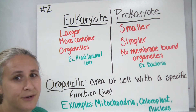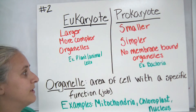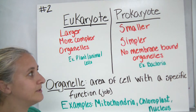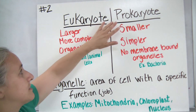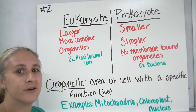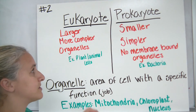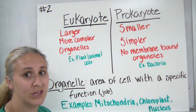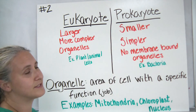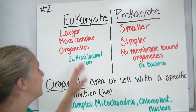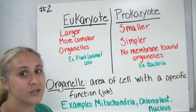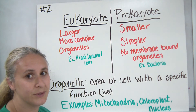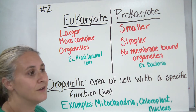The second thing we'd like to talk about with cells are the differences between the types of cells. There are two main types of cells we're going to be discussing: eukaryotes and prokaryotes. Eukaryotic cells are larger, whereas prokaryotic cells tend to be smaller. Eukaryotic cells are much more complex, whereas prokaryotic cells are much simpler — very simplistic, very primitive.